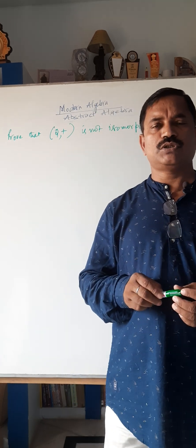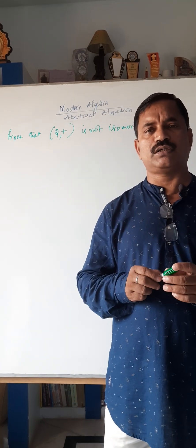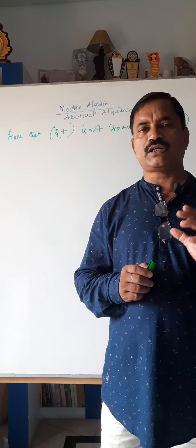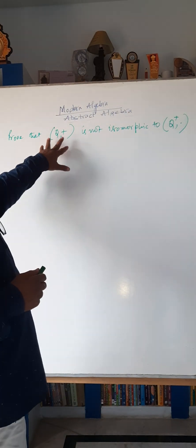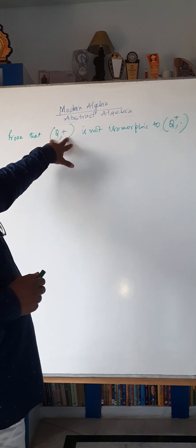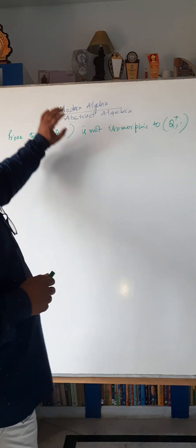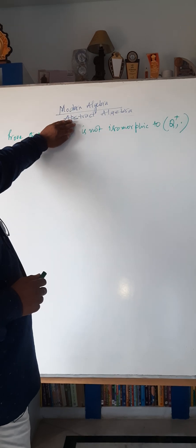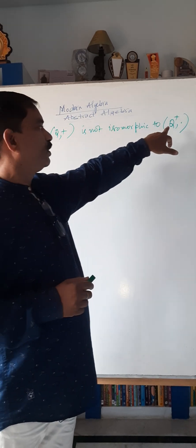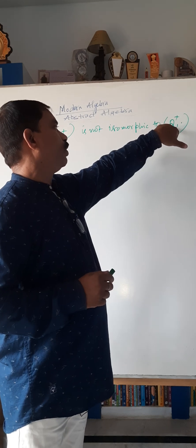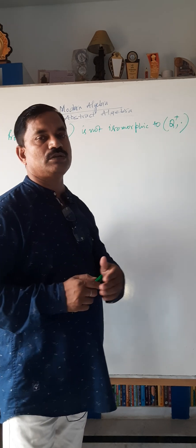Dear students, I am going to tell you that abstract algebra is very important. We will discuss the problem: prove that (Q, +) is not isomorphic to (Q⁺, ·). That is, the group of rational numbers with respect to addition is not isomorphic to the group of positive rational numbers with respect to multiplication.